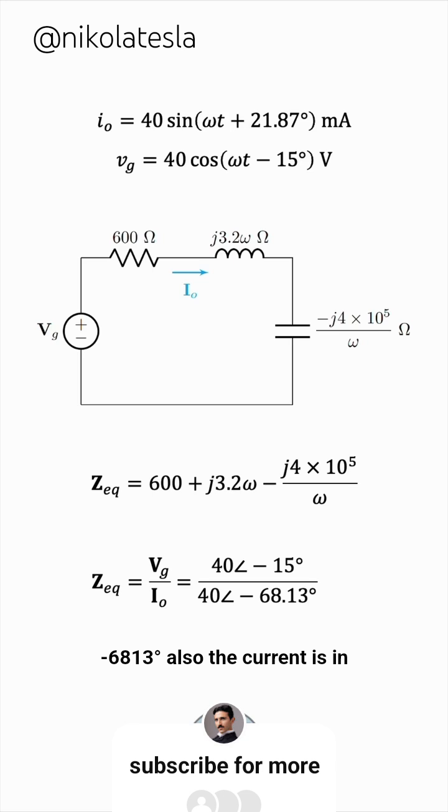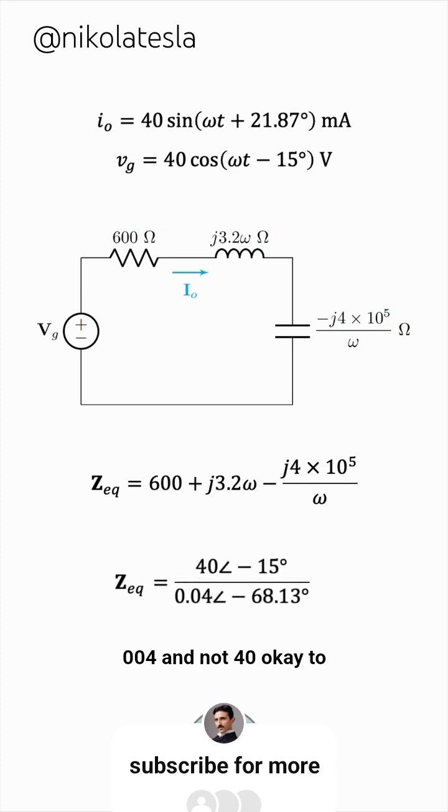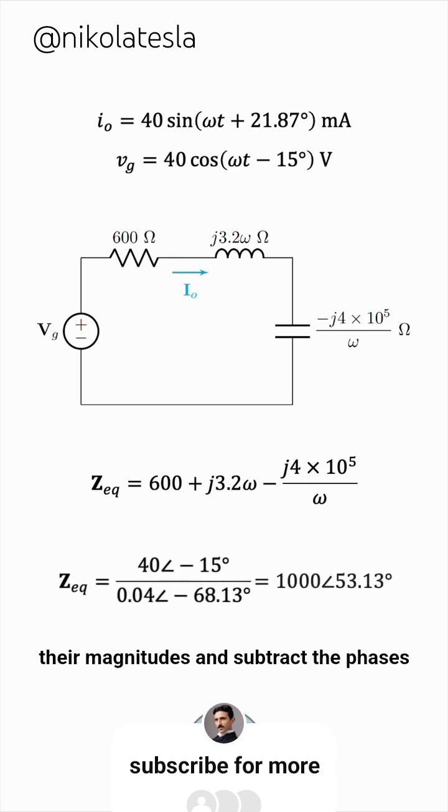Also, the current is in milliamperes, so it's going to be 0.04, and not 40. Okay, to divide two complex numbers, you divide their magnitudes and subtract the phases.